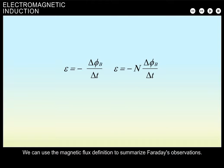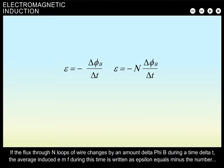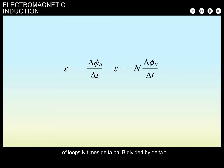We can use the magnetic flux definition to summarize Faraday's observations. If the flux through N loops of wire changes by an amount delta phi b during a time delta t, the average induced EMF during this time is written as epsilon equals minus the number of loops N times delta phi b divided by delta t. This equation is known as Faraday's law of induction.